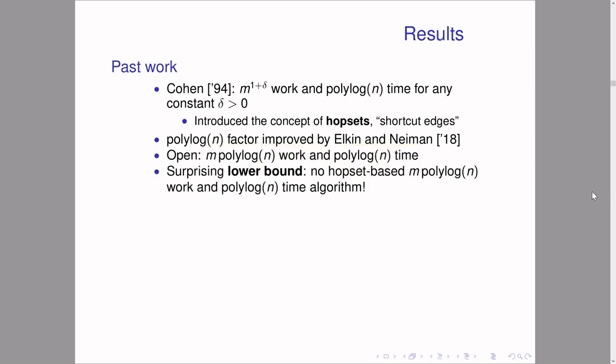So why has this problem been open so long? One potential answer is that, perhaps surprisingly, there is a lower bound graph that essentially rules out all hopset-based algorithms: there exists a specific lower bound graph for which any hopset guaranteeing polylog-hop approximate shortest paths needs more than m·polylog edges. Therefore it's impossible to use only hopsets to solve this problem.